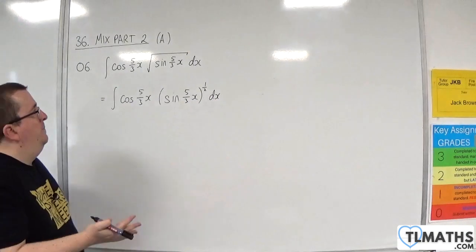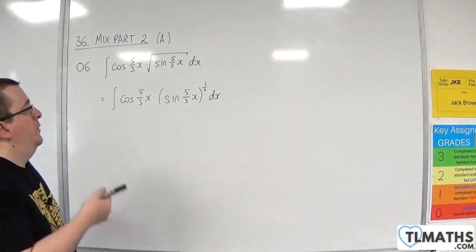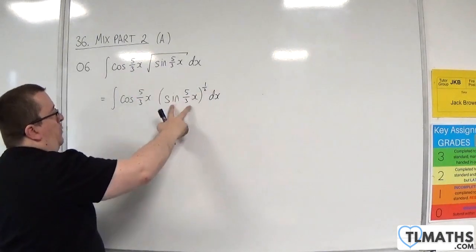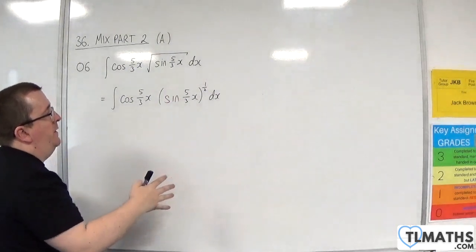Well, the reason is that inside the square root, we've got our interior function, sine of 5 thirds x. And I know that's going to differentiate to a multiple of what we've got on the outside.